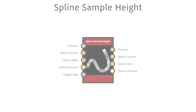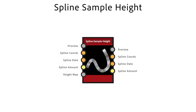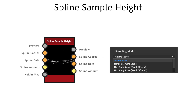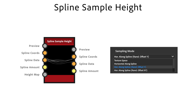The spline sample height node uses an input height map to modify the height of the input splines. With sampling mode I control value to spline mapping. Texture space applies values directly in place. Horizontal along splines assigns rows to distinct splines, and horizontal along spline random offset x and y adds random offsets per spline.